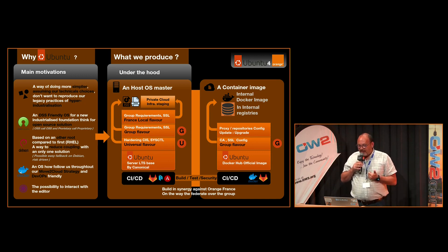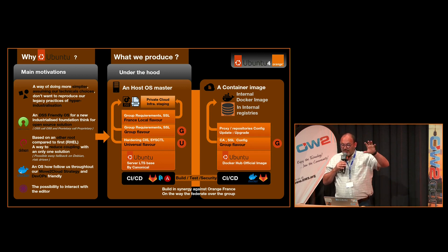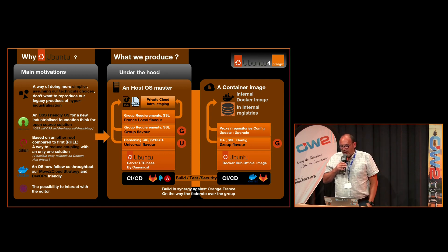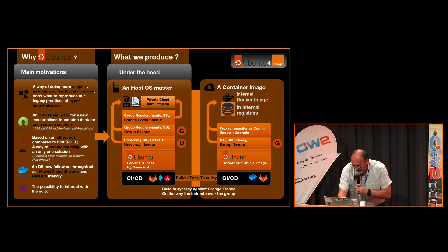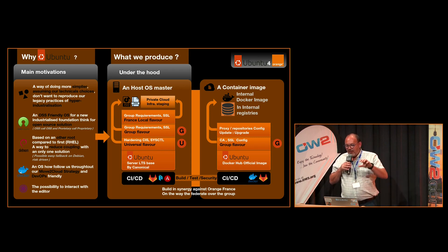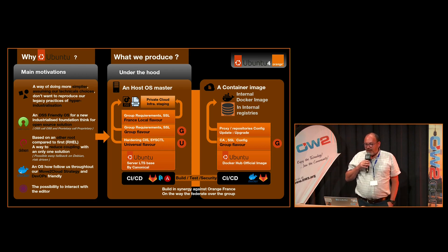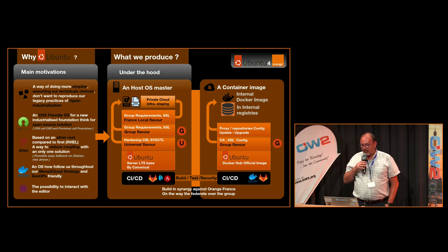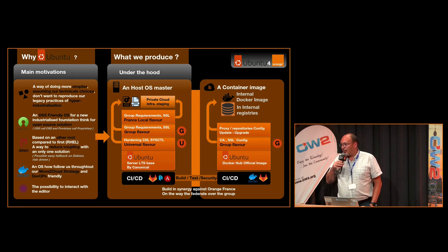The second artifact is a container image — the smallest possible, but with all the mandatory components and configurations we need, and also needed to respond to our security requirements. These two artifacts are for us a global foundation of response for infrastructure, for application projects, or other needs within the Orange France information system. And we want to generalize usage to the group.